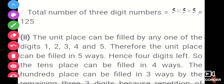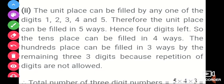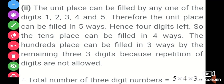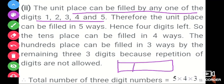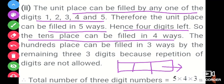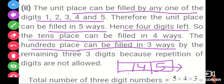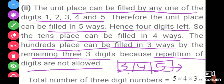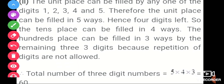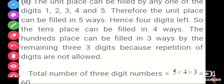Now let us write this out formally. The unit place can be filled by any one of the digits 1, 2, 3, 4, 5 — so there are 5 ways. Hence 4 digits are left, so the tens place can be filled in 4 ways, and the hundreds place in 3 ways. The total is 5 × 4 × 3 = 60.